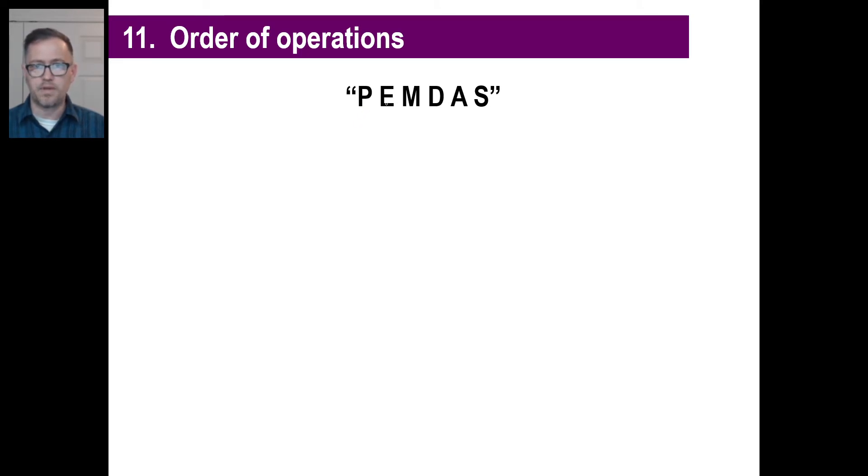P stands for parentheses. E stands for exponents. Those are things like five squared is 25 or something like that. Multiplying and dividing, you can kind of clump those together if you want to. That's M and D. You can clump together addition and subtraction if you want to. You can just go left to right if you want. Because you can get some drastically different answers if you don't do them that exact way.